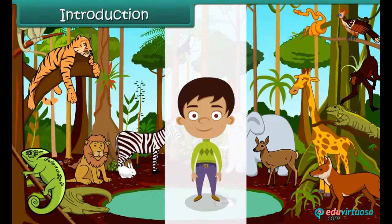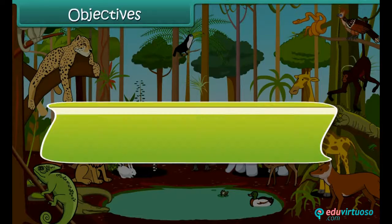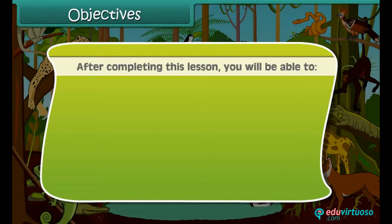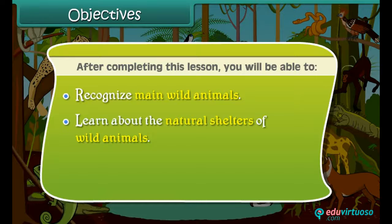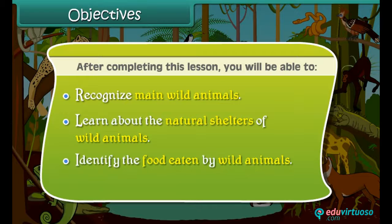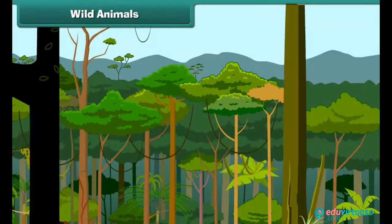Objectives: After completing this lesson, you will be able to recognize wild animals, learn about the natural shelters of wild animals, identify the food eaten by wild animals, and list the importance of wild animals. The jungle is the natural home of wild animals.